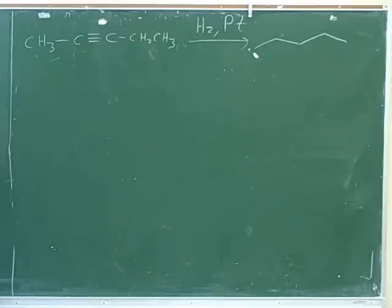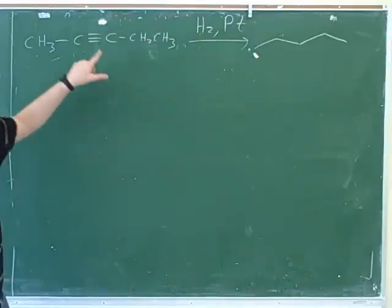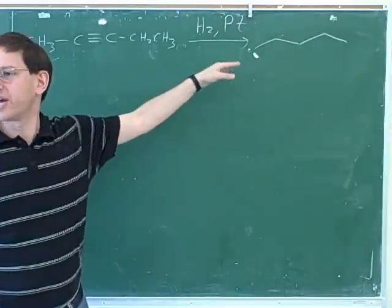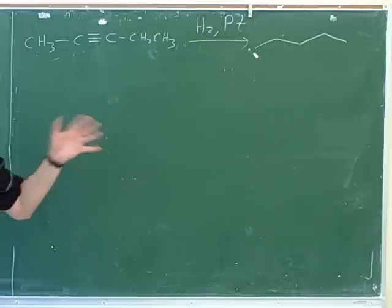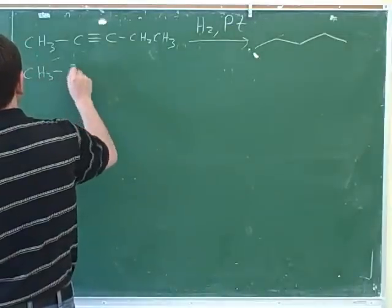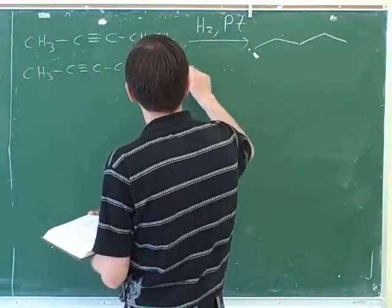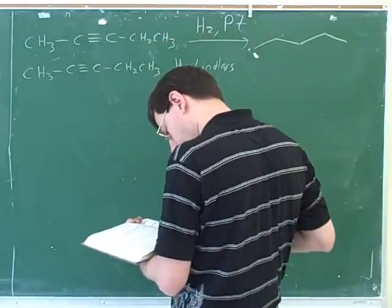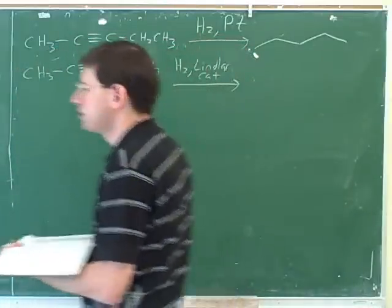Does anyone remember what the right reagent is to use if you want to stop with the alkene? That's what's called Lindlar's catalyst. If you want to turn an alkyne into an alkene, hydrogenation is a great way to go. First, this is going to hydrogenate into an alkene, and then it's immediately going to hydrogenate into an alkane without stopping. But if we wanted it to stop with the alkene, we'd have to use a less active hydrogenator. The Lindlar's catalyst is the way to do that.